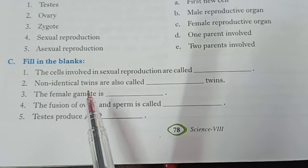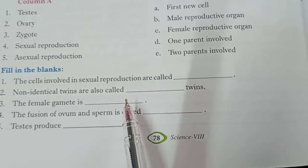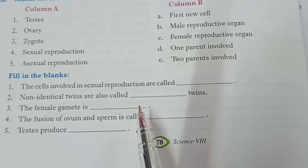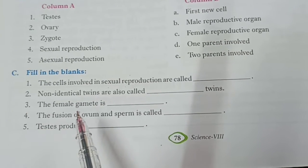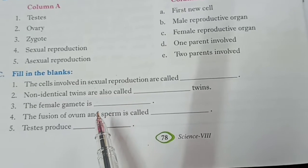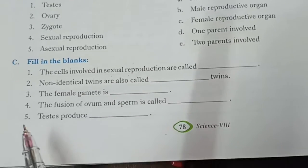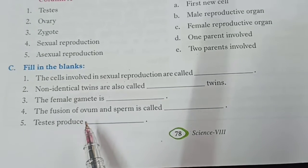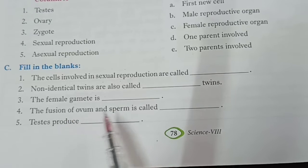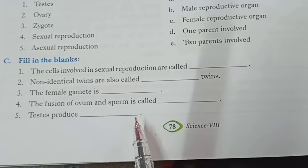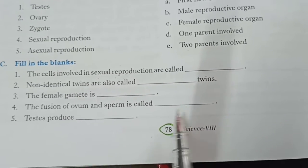Second: non-identical twins are also called — answer will be fraternal twins. Third: the female gamete is — female gamete ko kya kaha jata hai — answer: ova or egg cell. Fourth: the fusion of ovum and sperm is called — sperm and ovum ke fusion ko kya kaha jata hai — answer: fertilization.